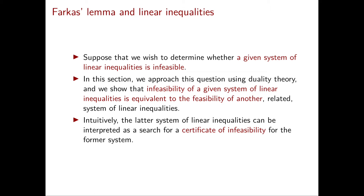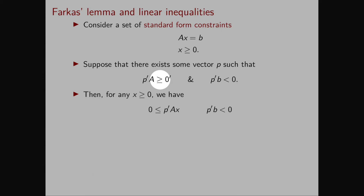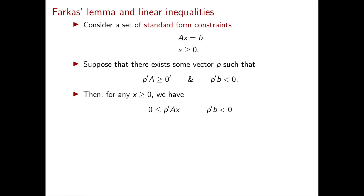Consider now a set of standard form constraints Ax equal to b, x greater than or equal to 0. What I want to do in this slide is to show you a possible way of convincing your boss that this system is infeasible. Suppose that there exists a vector p that satisfies p-transpose A greater than or equal to 0-transpose and p-transpose b strictly negative. We will see that this vector p is the certificate that we're searching for.